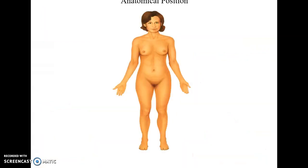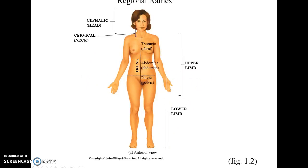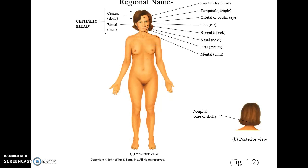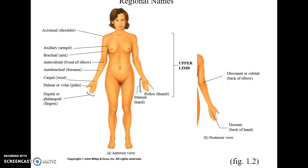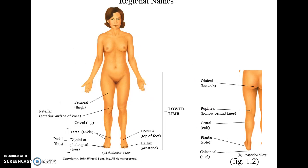The anatomical position is the person facing you, standing up, arms by the side, palms facing forward — that's the key feature. There are many named regions on the surface of the body that you will need to learn, including cephalic (head), cervical (neck), the upper and lower limbs, and the trunk. Sub-regions for the head, trunk, and limbs are found in figure 1.2 in your textbook.